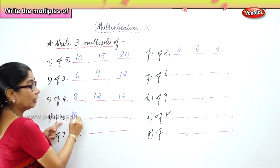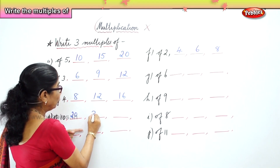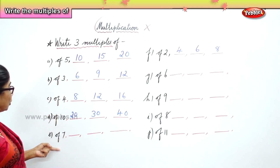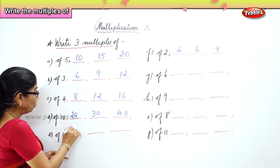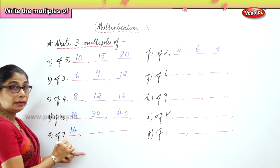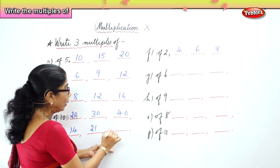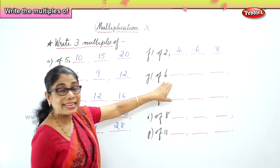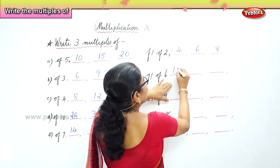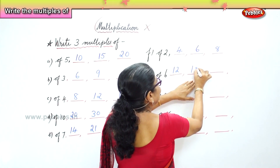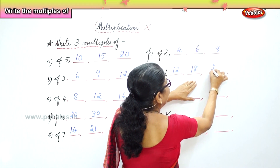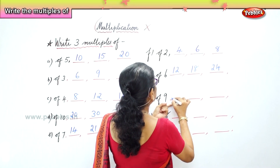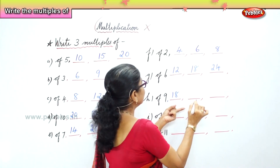Multiples of ten: ten, twenty, thirty, forty. Write three multiples of seven: seven, fourteen, twenty-one, twenty-eight. Next, write three multiples of six: six, twelve, eighteen, twenty-four.